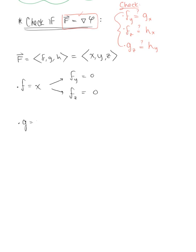Since G = y, the partial derivative of G with respect to X and the partial derivative of G with respect to Z are both zero as well. And since H = z, the partial derivative of H with respect to X and the partial derivative of H with respect to Y are both zero.